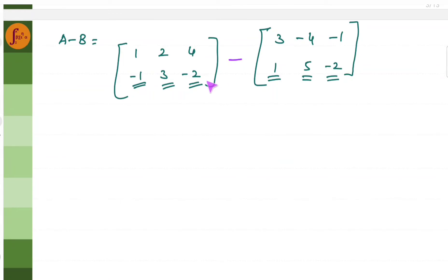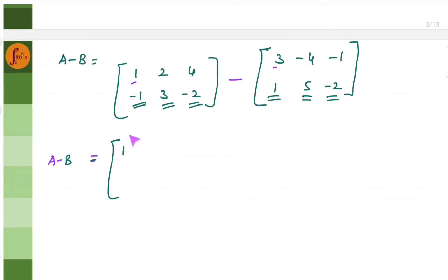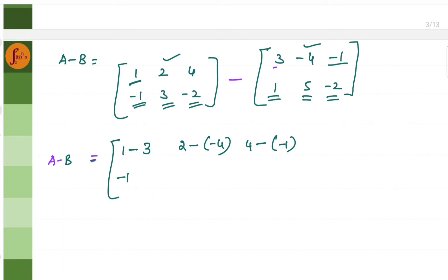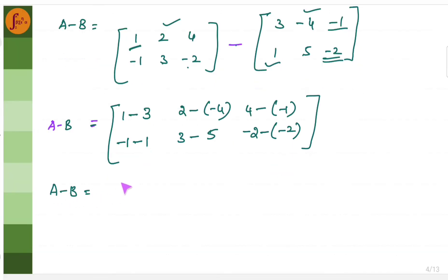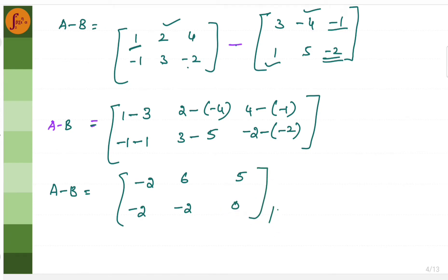Similarly, let's find A minus B — matrix subtraction. Taking one by one: 1 minus 3 is minus 2, 2 minus of minus 4 is 6, 4 minus of minus 1 is 5. For the second row: minus 1 minus 1 is minus 2, 3 minus 5 is minus 2, minus 2 minus minus 2 is 0. This is matrix A minus B.